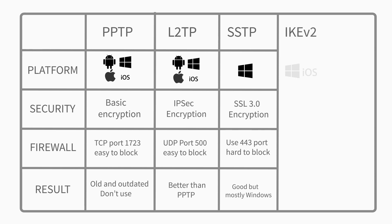IKEv2, or Internet Key Exchange Version 2, is a relatively new protocol developed by Microsoft and Cisco. Like L2TP, IKEv2 is also paired with an authentication suite such as IPSec to get encryption features — if your provider says IKEv2, it most probably means IKEv2/IPSec. IKEv2 is not as common as the other protocols, as it's supported by fewer platforms, mostly Windows and iOS. However, mobile users may still consider it, as it's good at automatically re-establishing a VPN connection when users temporarily lose their internet connection — for example, switching between home Wi-Fi and mobile connections, or moving regularly between hotspots.